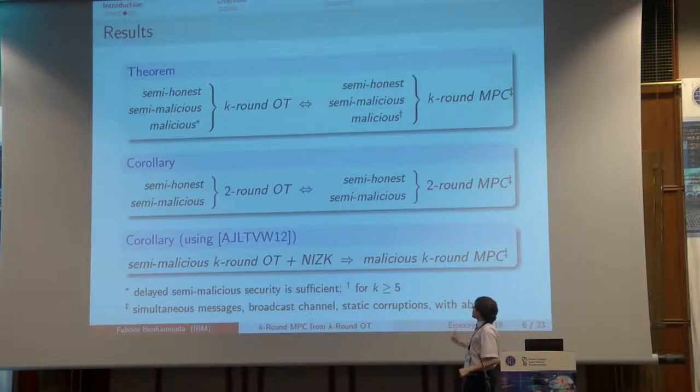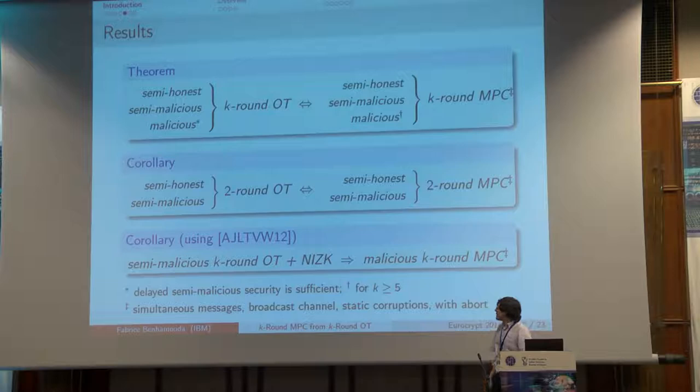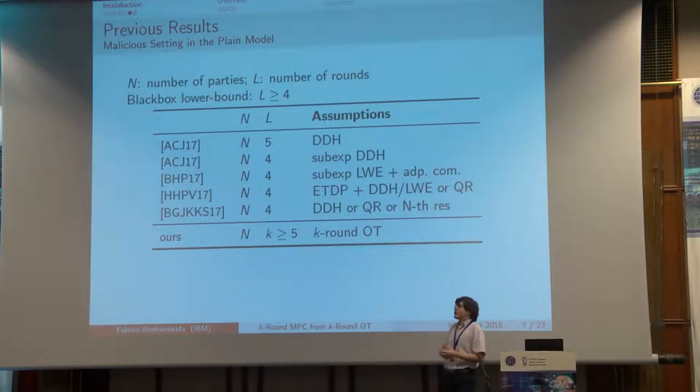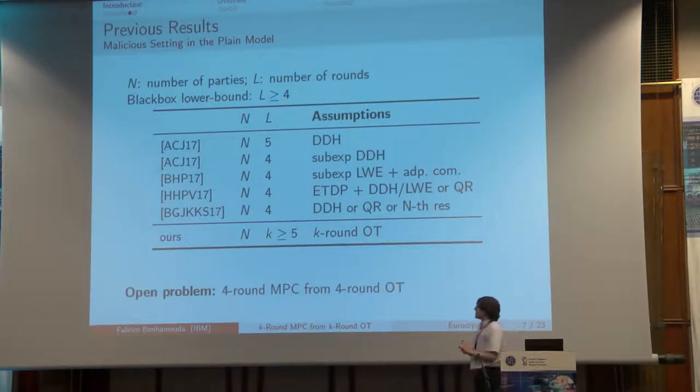Our paper shows that we can construct K-round MPC from K-round OT. So K-round OT is equivalent to K-round MPC. That's true in all the settings we've seen before: semi-honest, malicious, and covert settings. In the malicious setting, there's a black box lower bound of four rounds, and recent work achieved this lower bound under standard assumptions. We don't achieve the lower bound—we achieve only five-round MPC—but from minimal assumptions.